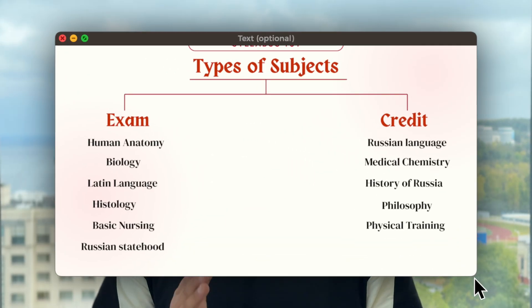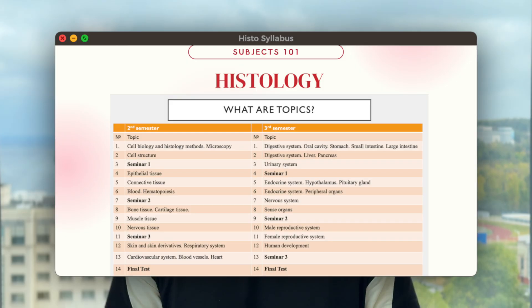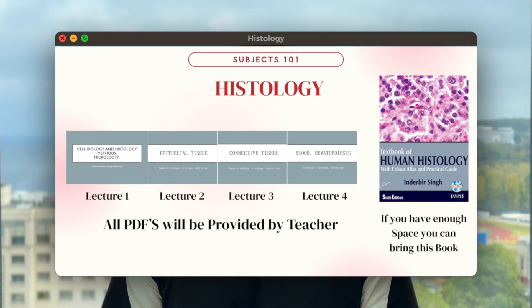The next subject is histology. You will study topics including cell biology, cell membrane, epithelial tissue, connective tissue, and all types of tissue. You will be seeing all systems under the microscope and studying organelle structures. I think this is an important subject you should focus on more. Everything will be provided by teachers, but if you have enough space in your luggage, I recommend bringing Inderbir Singh's textbook — otherwise the PDF will be provided in the description.